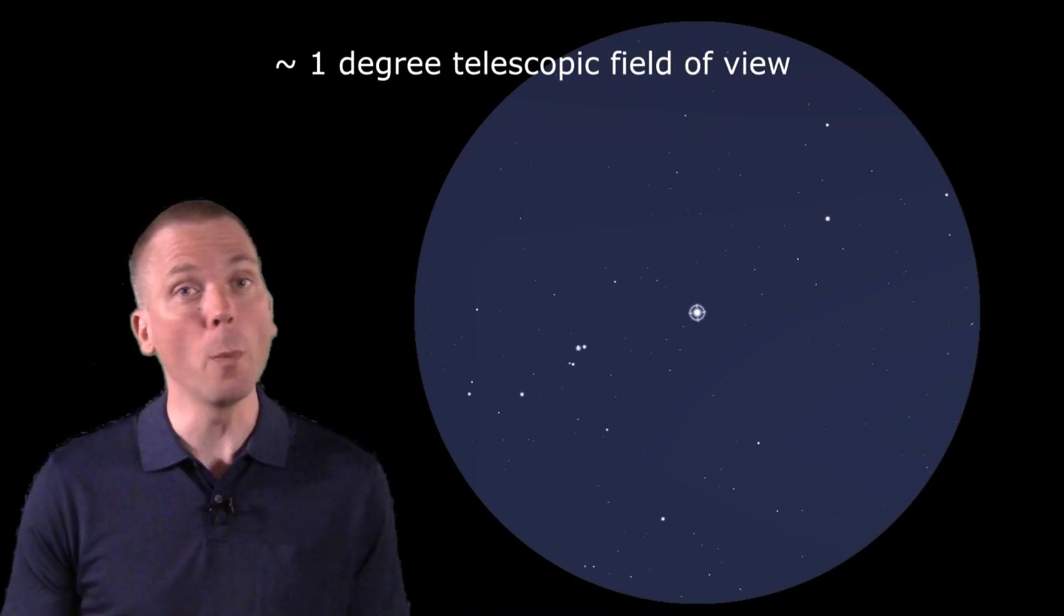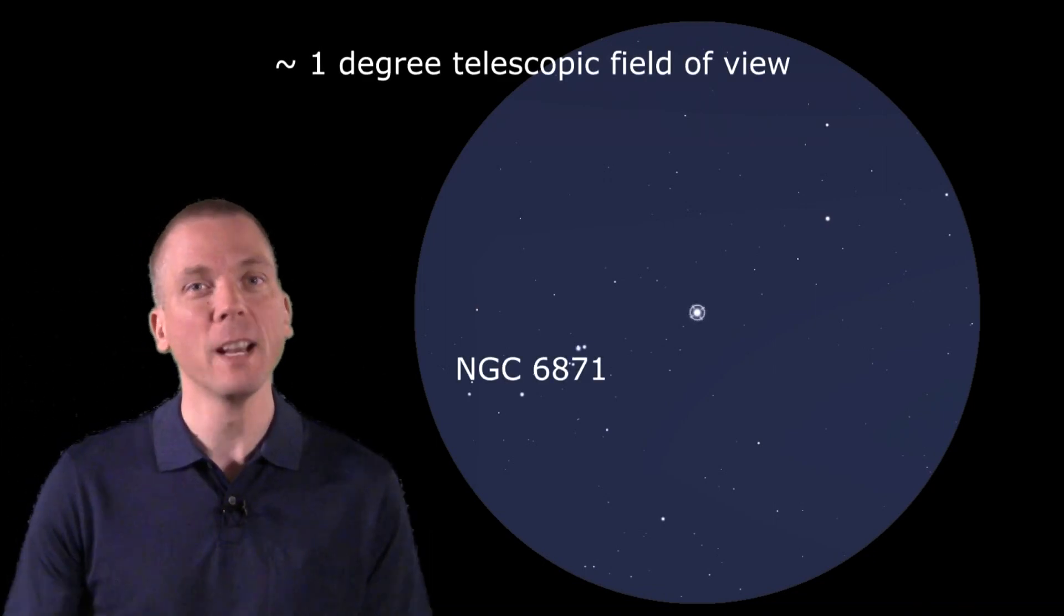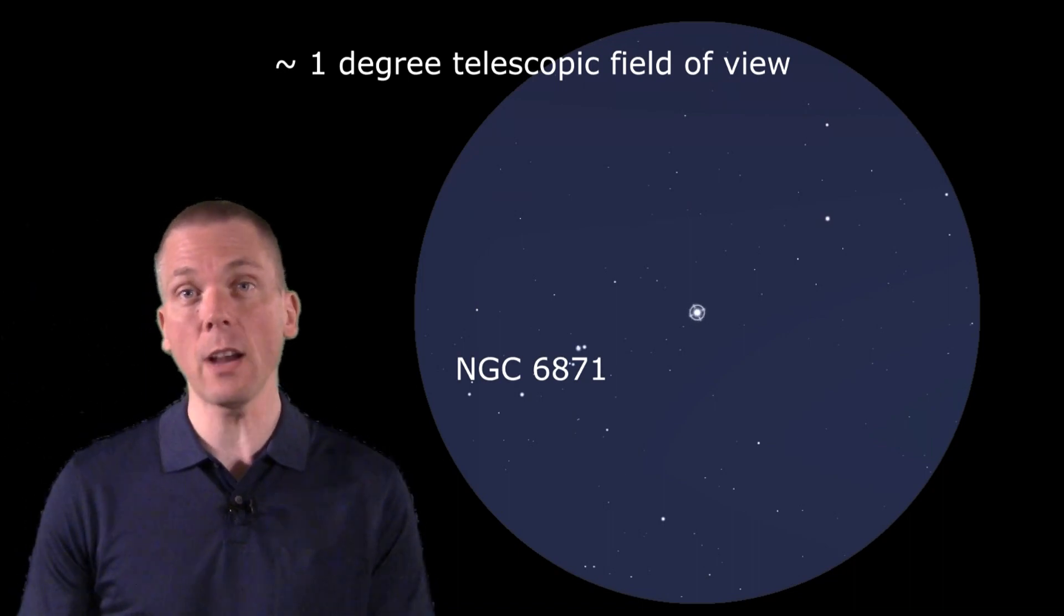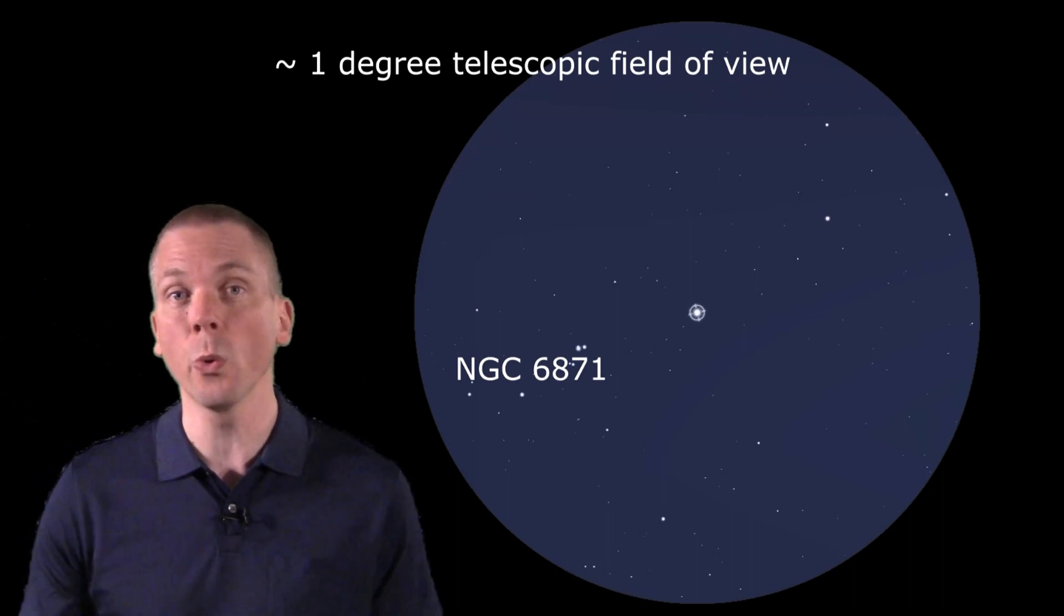Center 27 Cygni with an eyepiece, showing a full 1 degree of sky. Open cluster NGC 6871 is in the field of view. Now move very slightly towards the south, placing 27 towards the northern edge of the field.